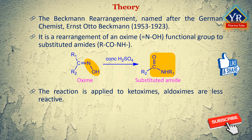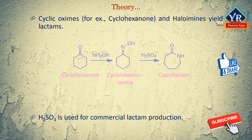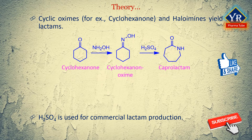The reaction is usually applied to ketoximess, and aldoximes are often less reactive. The rearrangement has also been successfully performed on haloamines and nitrones. Cyclic oximes — for example, cyclohexanone as shown in the reaction — and haloamines yield lactams.